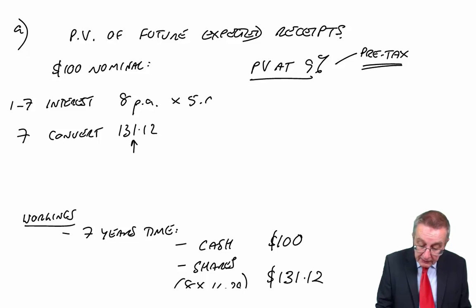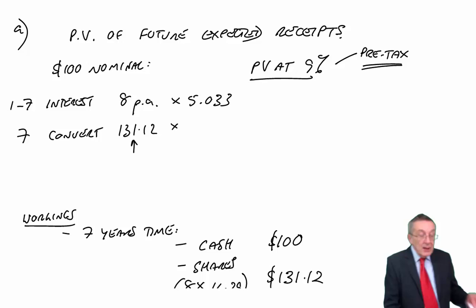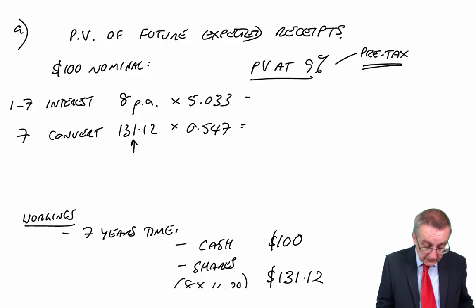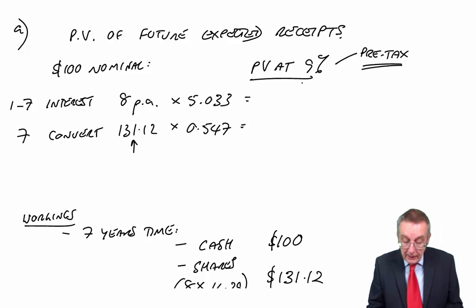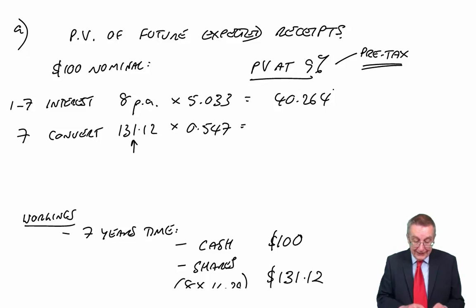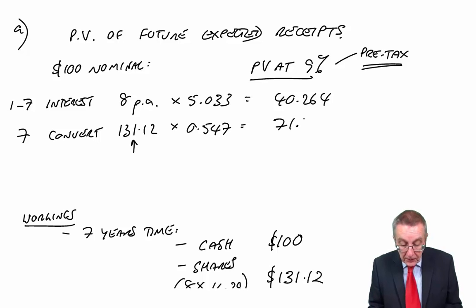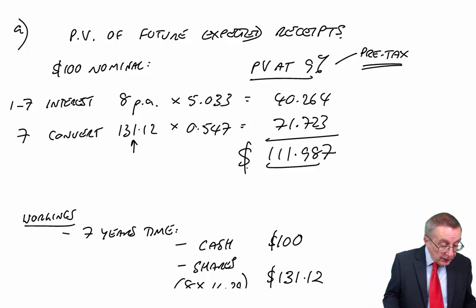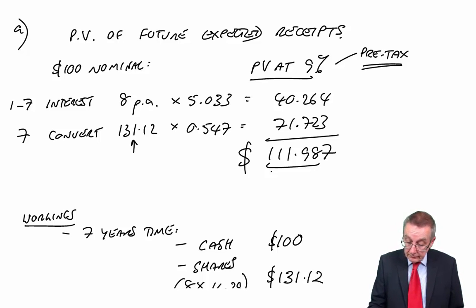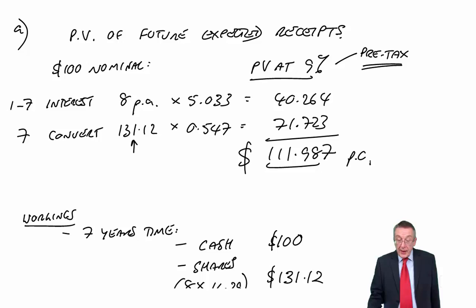There's a seven-year annuity at 9%. The factor is 5.033. There's the other flow in seven years' time, so the ordinary discount factor for seven years at 9% is 0.547, which gives me present values of 40.264, 71.723, a total 111.987. What did he want? Did he want it per unit? Yes, he did. 111.99 per $100 nominal. So there is the market value.